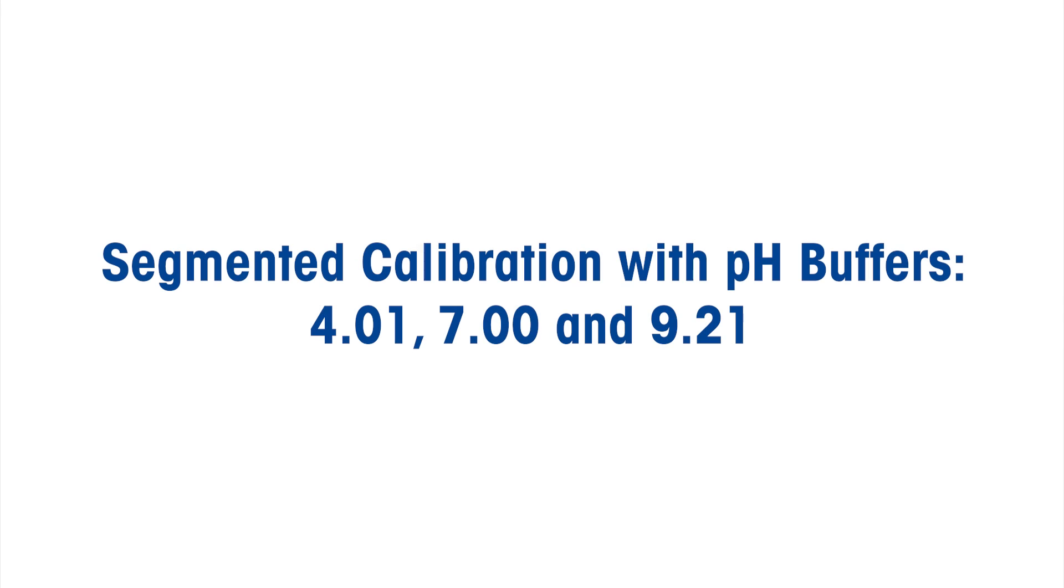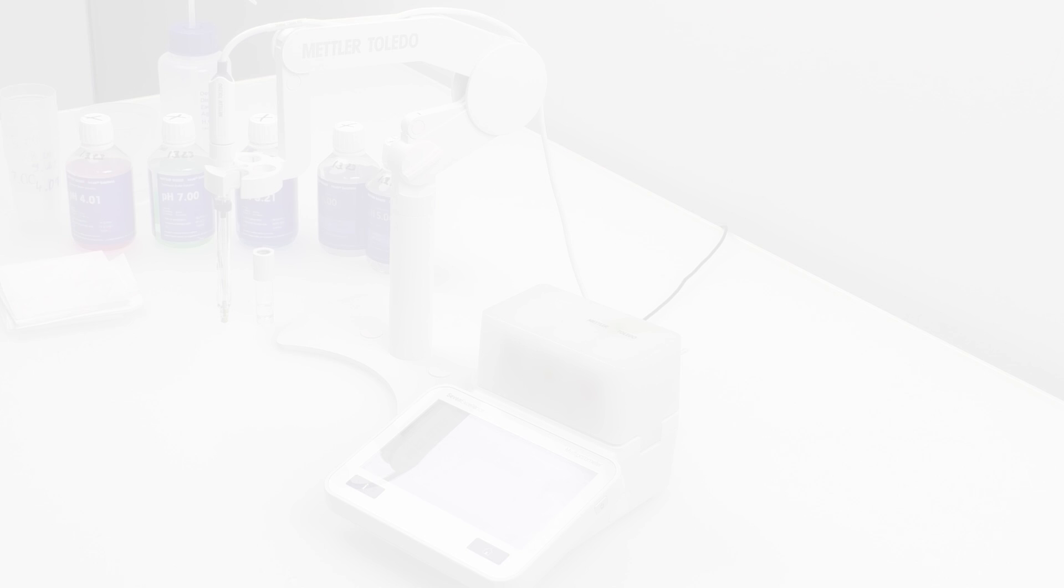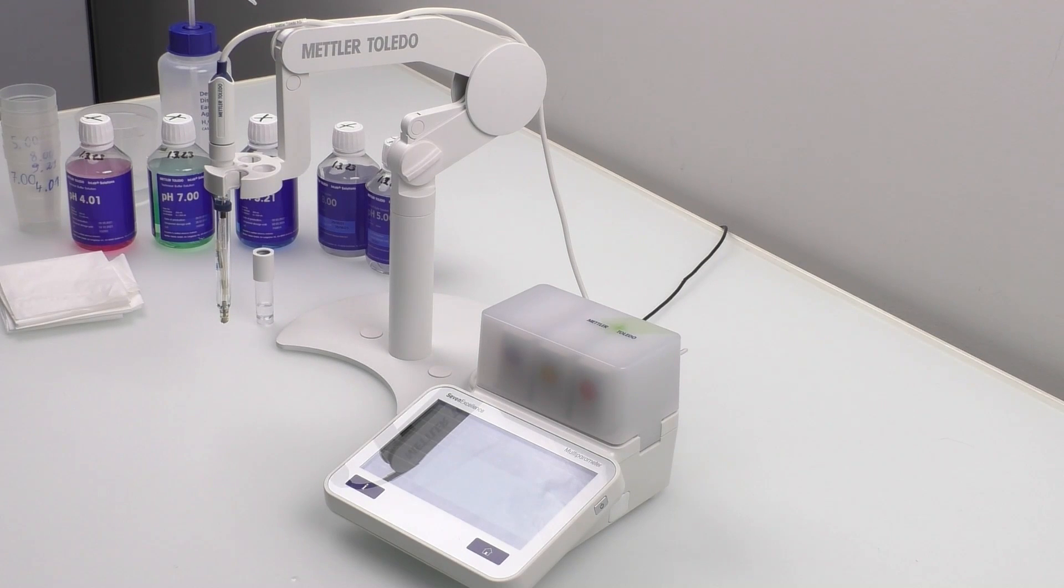Now, let's move on to segmented calibration with 3 pH buffers. To do this, we'll use the 7 excellence meter with the in-lab Pro-ISM sensor placed in the U-Place. For the segmented calibration, you will need 3 pH buffers: 4.01, 7.00, and 9.21. During calibration, be sure to rinse the sensor with deionized water and dab it dry with a tissue in between buffers.